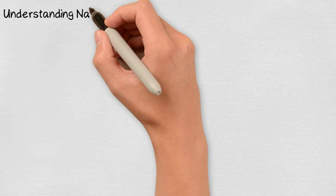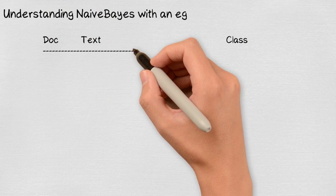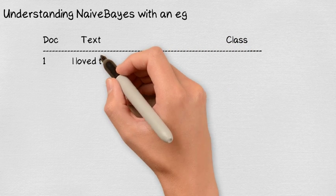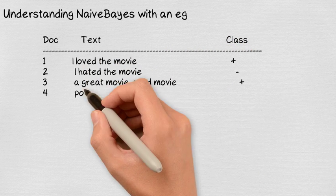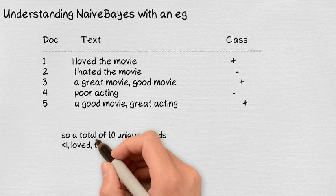Let us try to understand Naive Bayes with an example. Here, I have 5 documents with movie reviews of which 3 are positive and 2 are negative. If we observe, there are total 10 unique words in these documents.